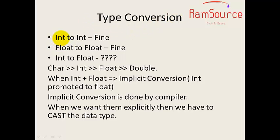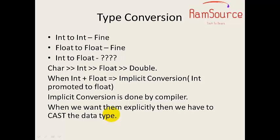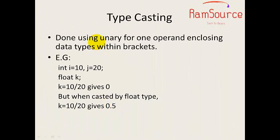Next, type conversion. Converting int to integer is fine; converting float to float is fine. But converting int to float requires attention. The hierarchy moves: character, integer, float, double. For example, int plus float — the lower data type is promoted to a higher type. The lower bit gets promoted to a higher bit. This is implicit conversion, which is done by the compiler, not by the programmer. If you want to explicitly convert, you use the typecast operator, which is done using a unary operator.